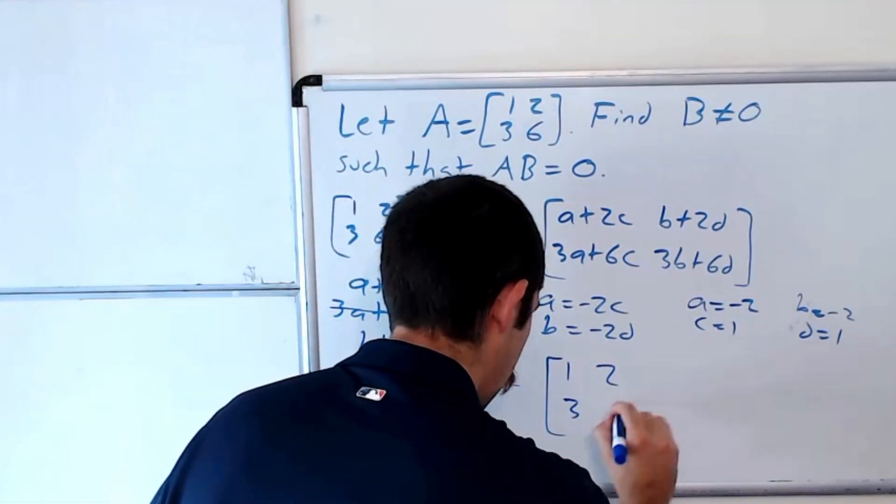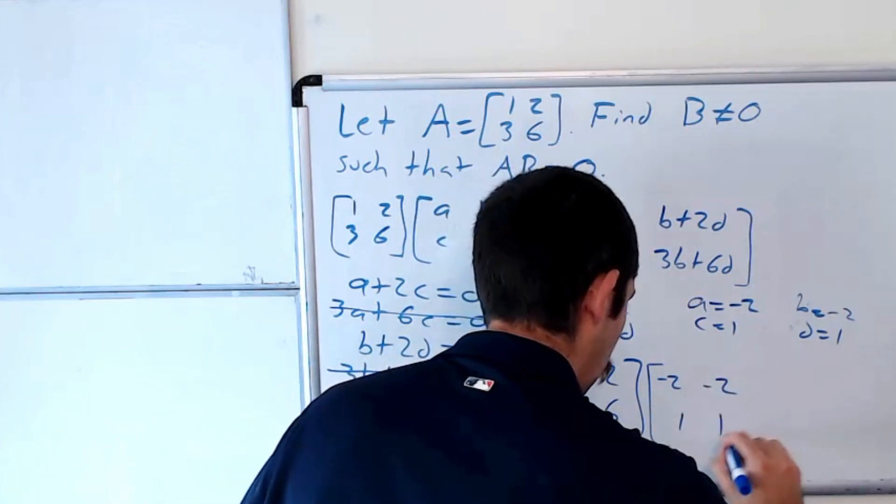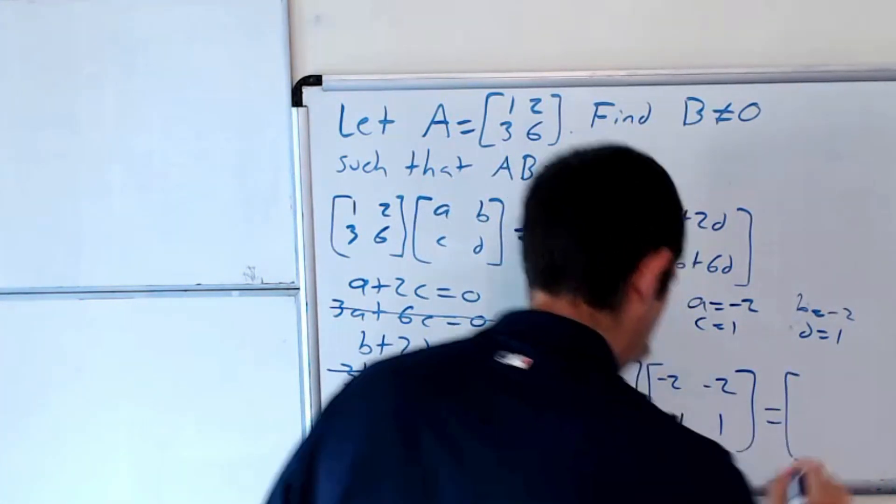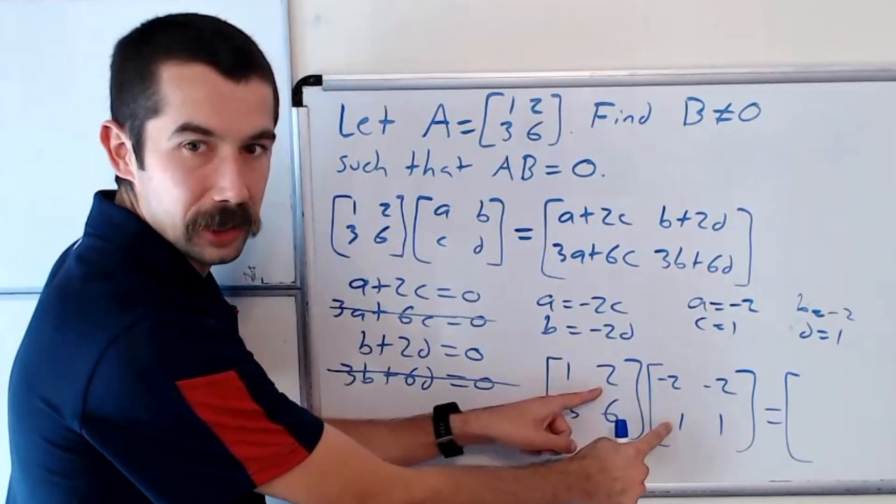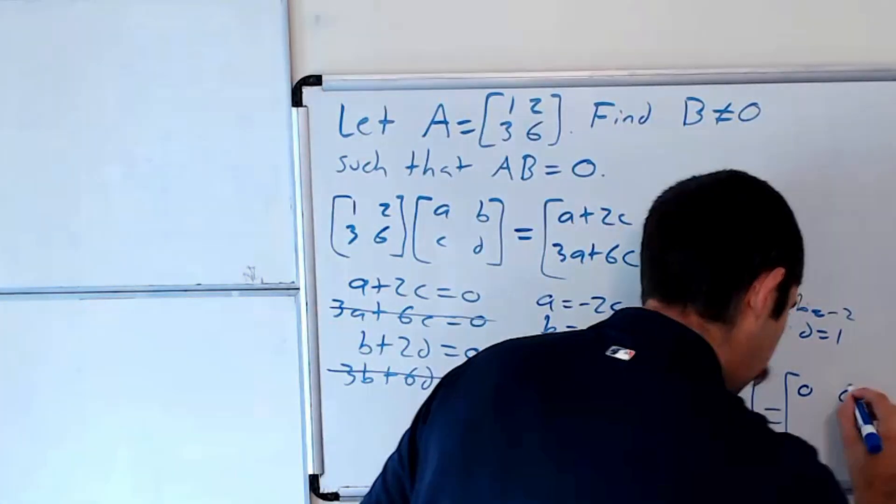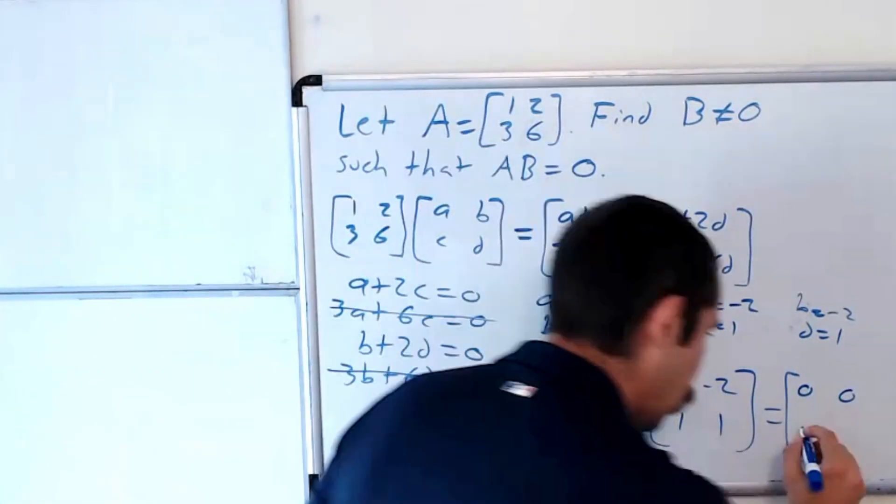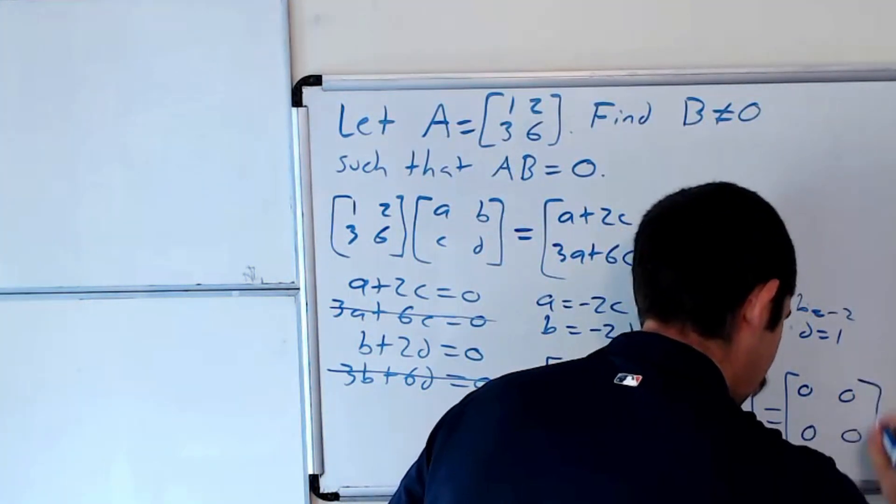So [1, 2; 3, 6] times [-2, -2; 1, 1]. That's equal to, well, let's see. Negative 2 plus 2 is 0. Negative 2 plus 2 is 0. Negative 6 plus 6 is 0. And negative 6 plus 6 is 0.